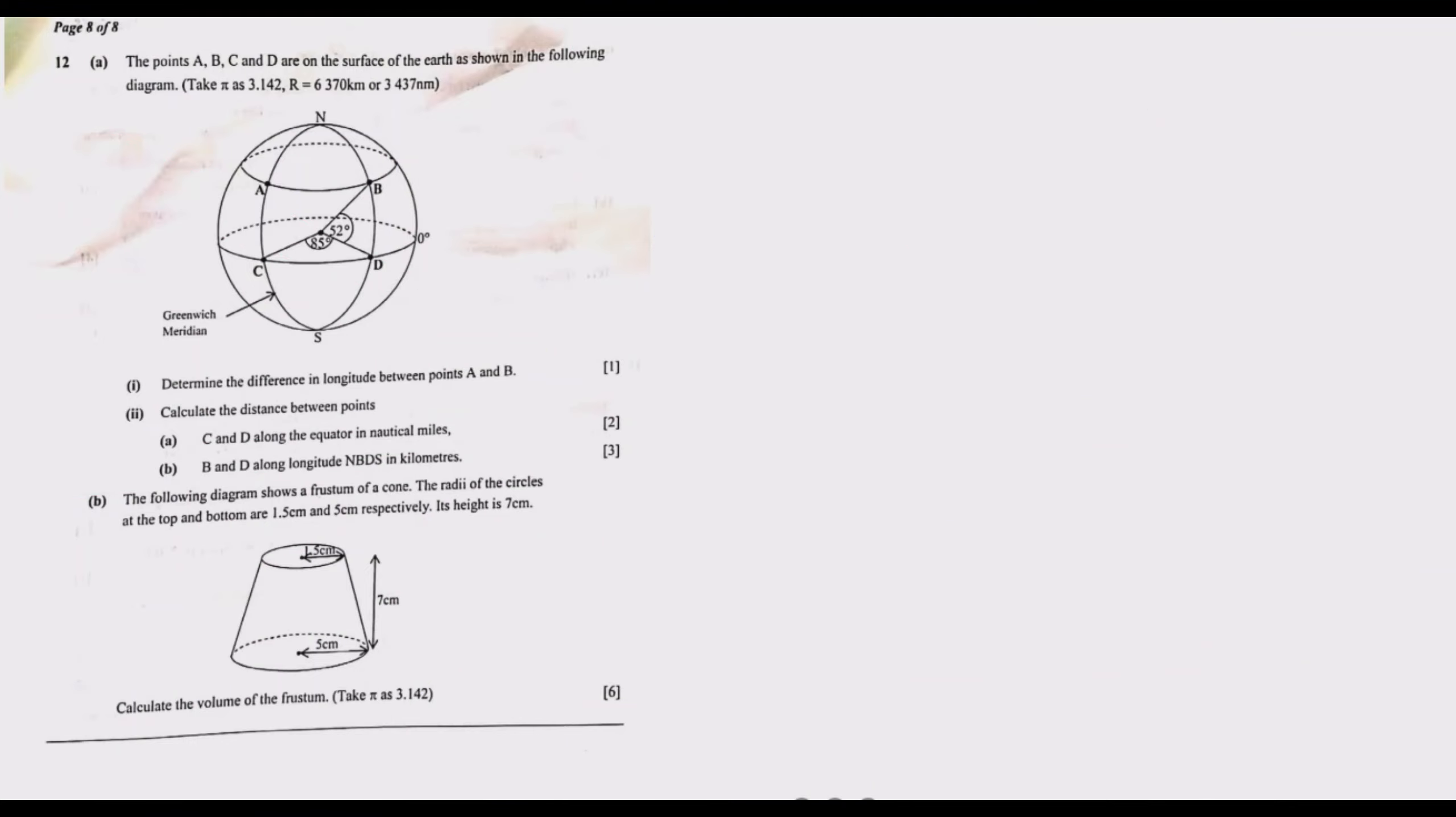Welcome to this episode. In this episode, we are looking at question 12 from the 2021 GCE mathematics paper 2. Question 12 reads: the points A, B, C, and D are on the surface of the earth as shown in the following diagram. Take pi as 3.142, radius 6,370 kilometers or 3,437 nautical miles.